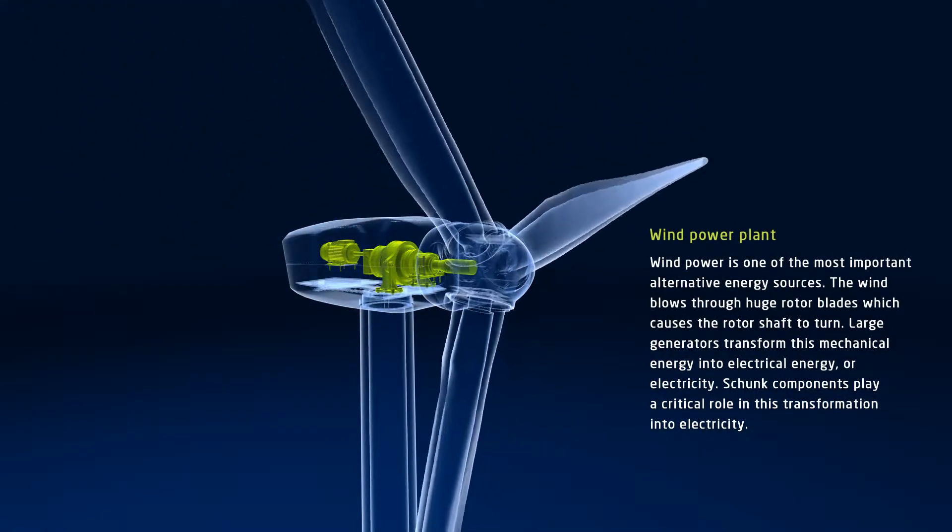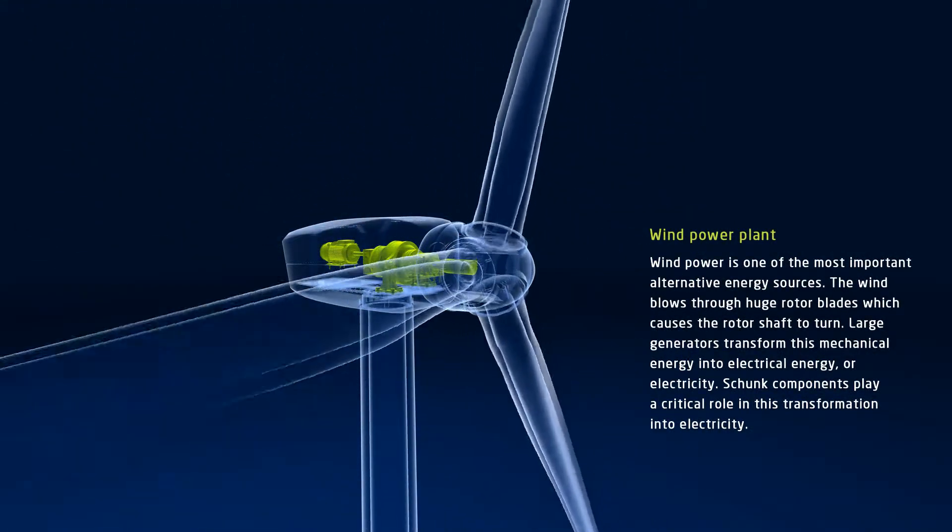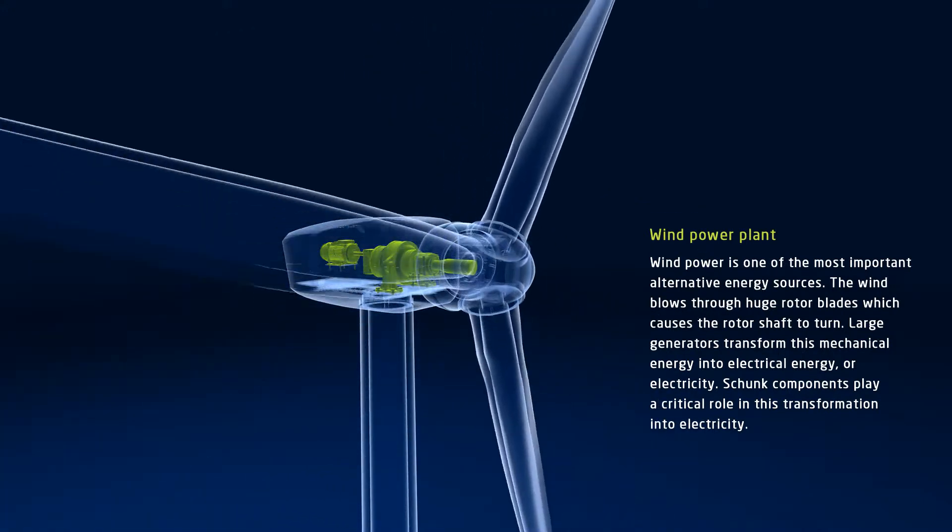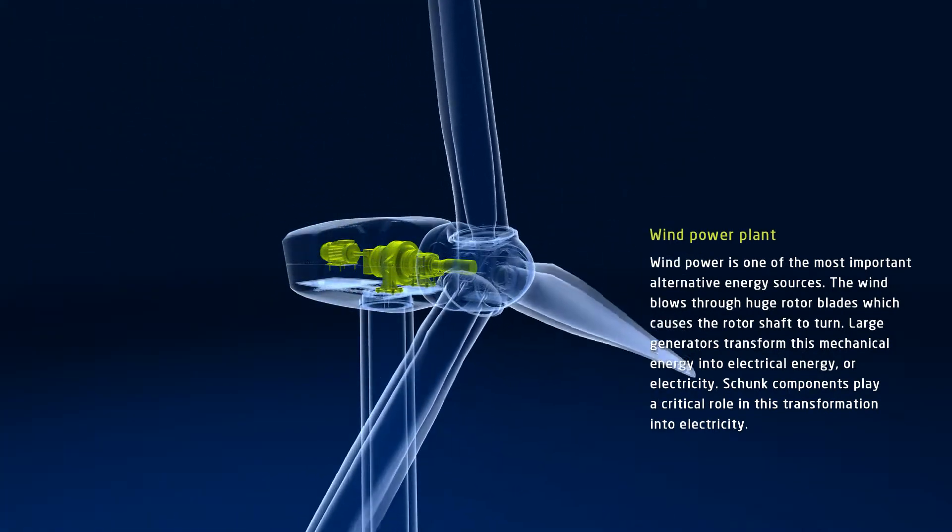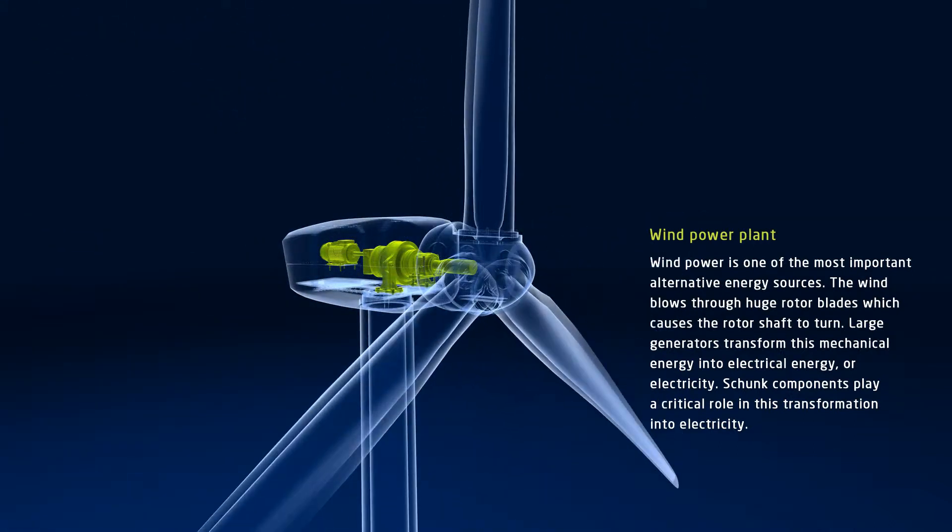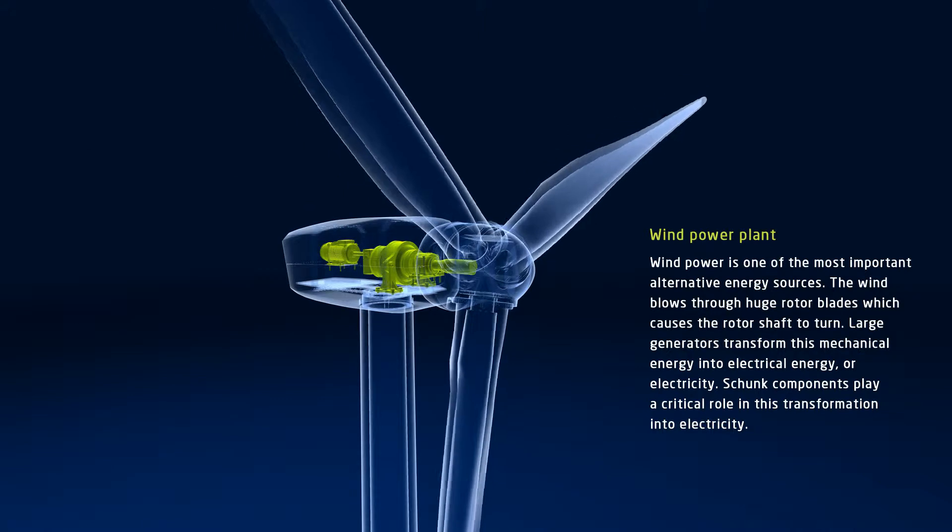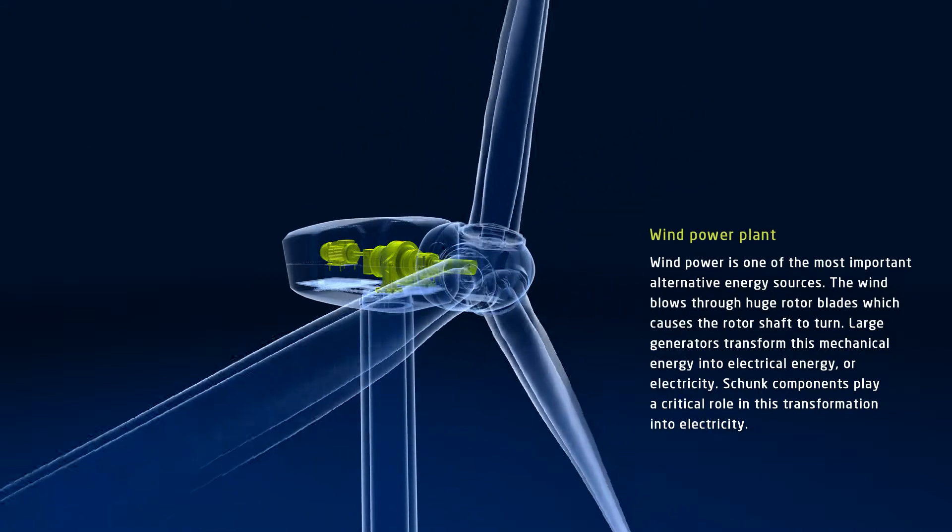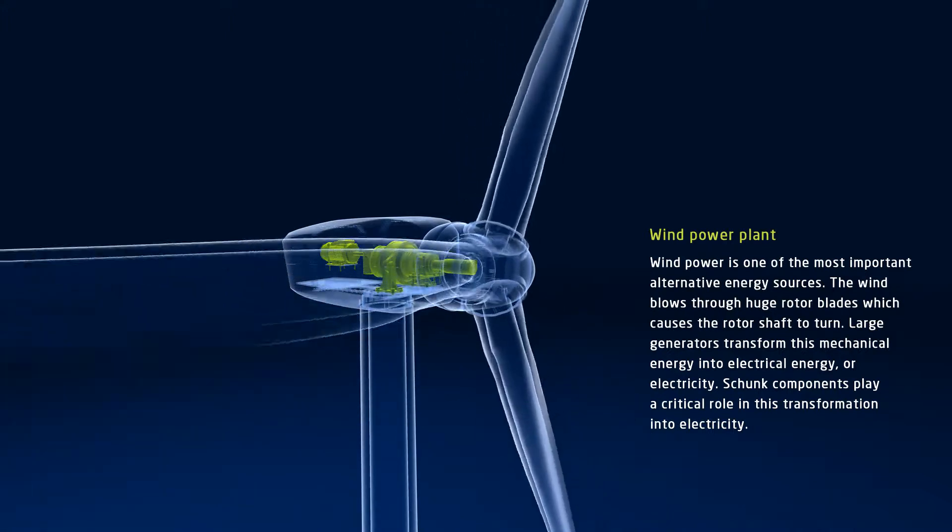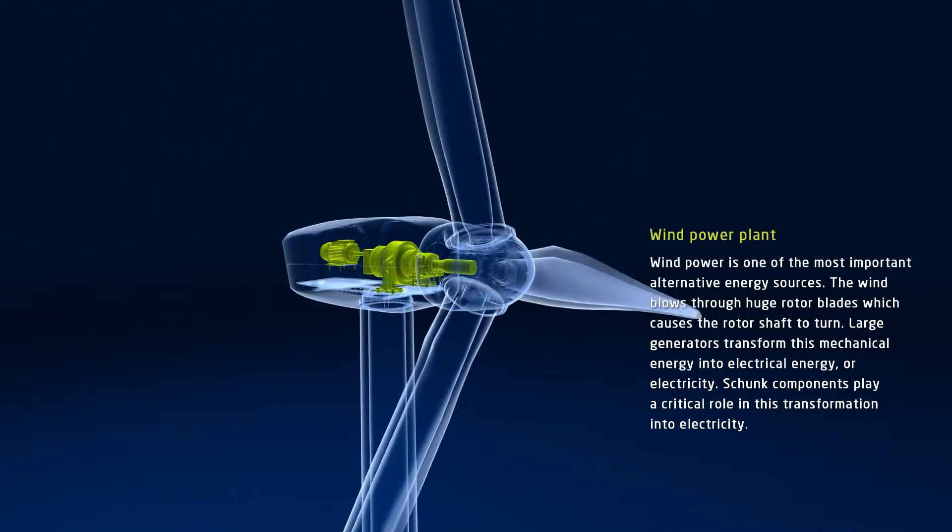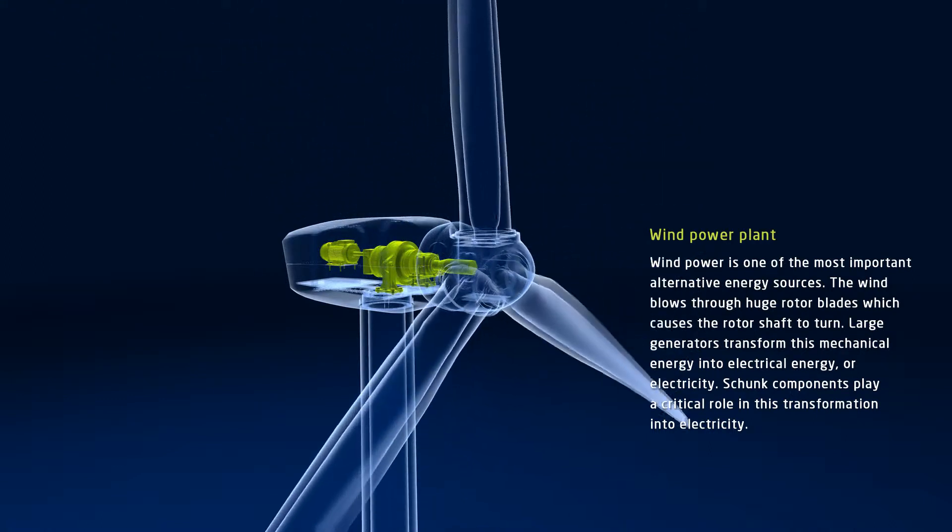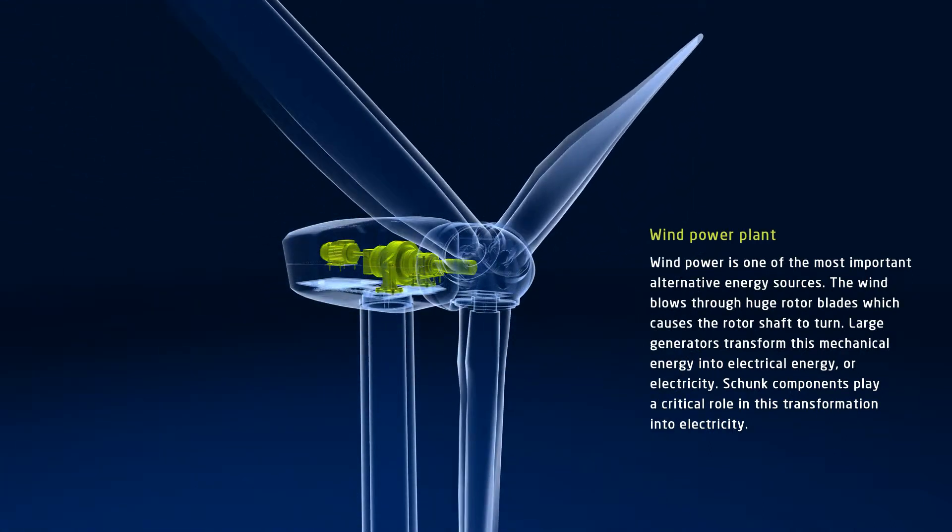Today, wind power has already become one of the most important alternative energy sources and the trend toward increasing use of this environmentally conscious technology will certainly continue. In wind power stations, a shaft is driven by rotor blades. The system generator transforms this mechanical energy into electrical energy or electricity. With regard to any electric current transfer issue, Schunk is a reliable partner in the manufacture and safe operation of wind power stations.